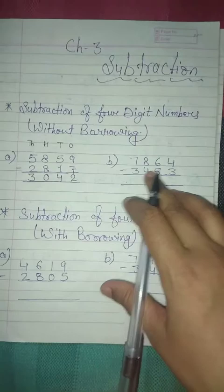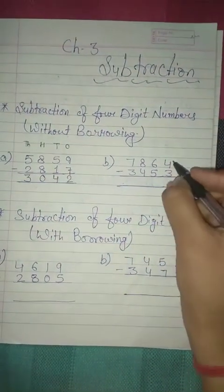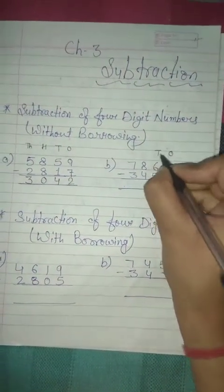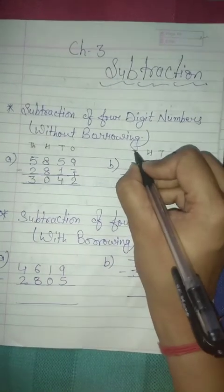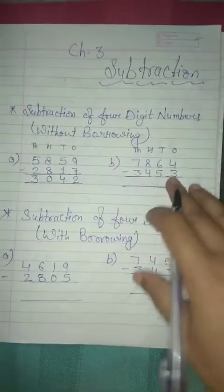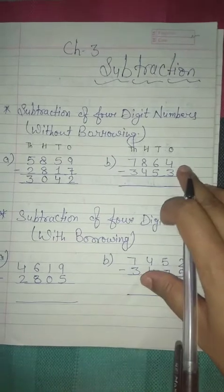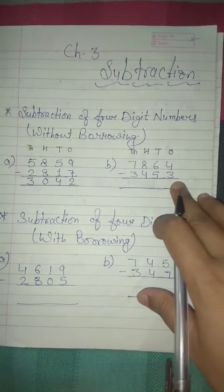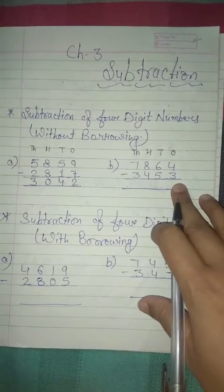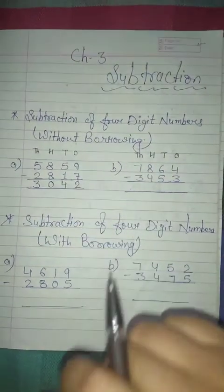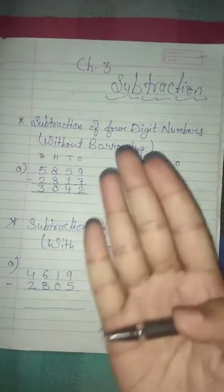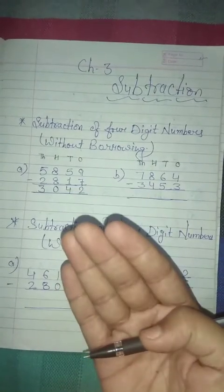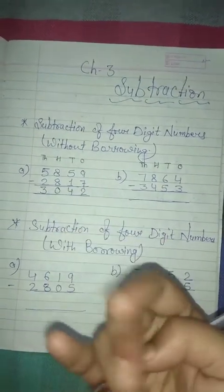Then solve your part B. Look at here. Again write down the places: ones, tens, hundreds, and thousands. Very good students, then solve the sums. So 4 minus 3 is equal to — how much, students? Tell me. Correct, 1. Because you have 4 toffees and 3 toffees are shared.